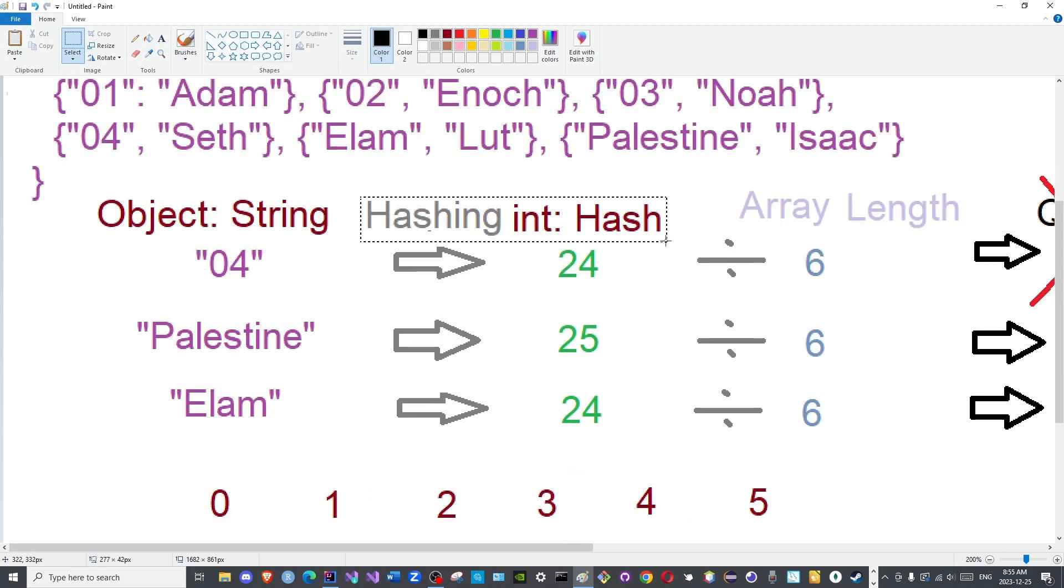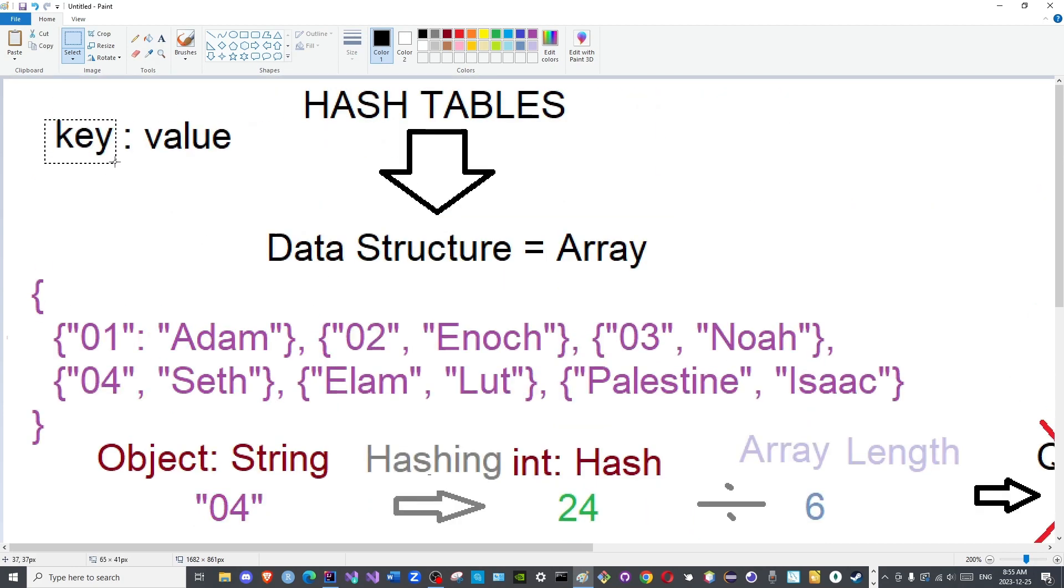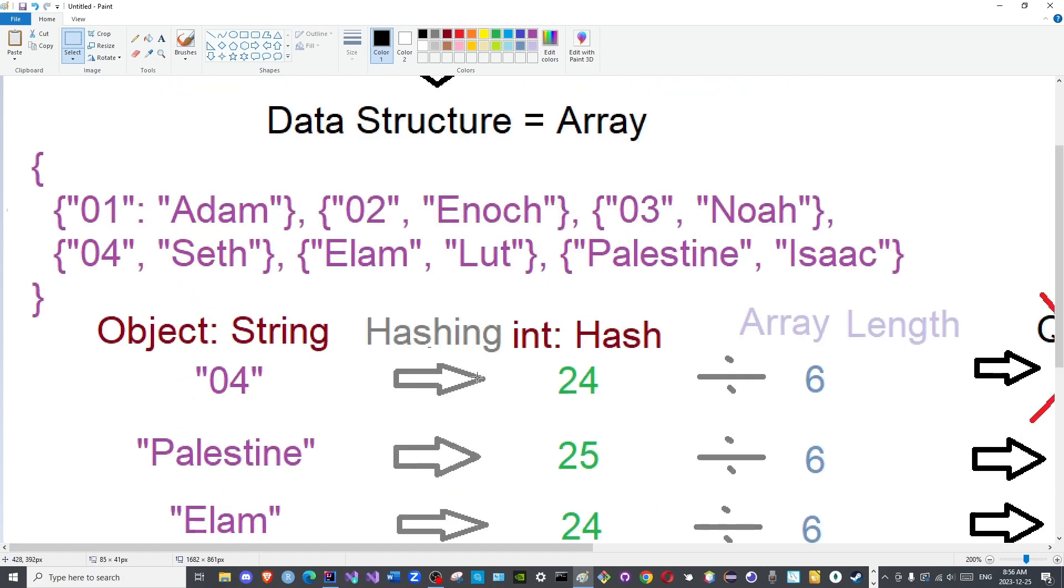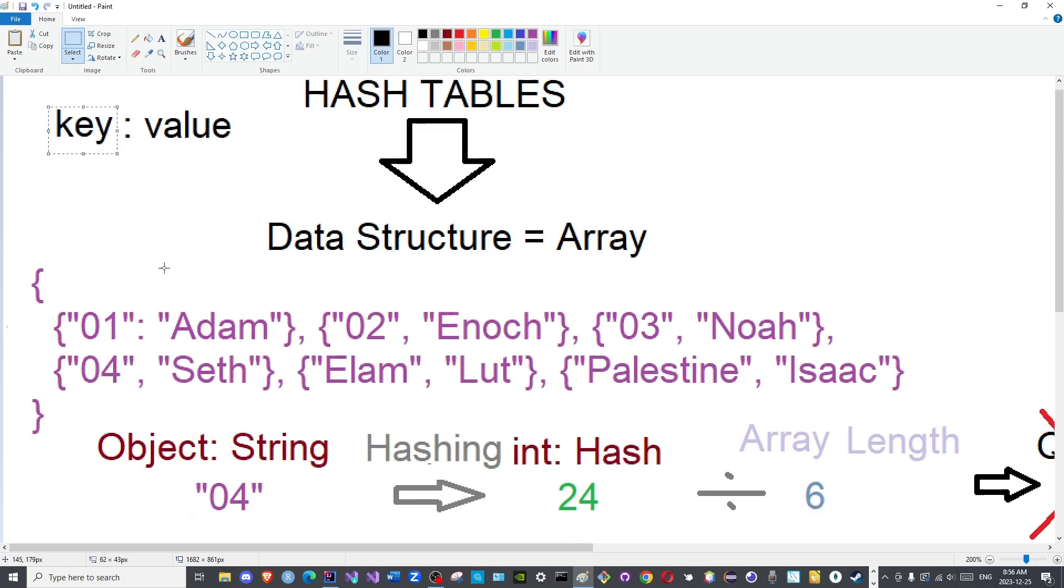How is the hash actually used, or how is the key actually used to search for data? That is what we will see after we cover collisions, bi-idhnillah, god willing. We will see the type of data being stored in each array block here. This was simply used to simplify the material. But in the upcoming lectures, bi-idhnillah and god willing, we will see how the hash is used as a key to search for its associated value.